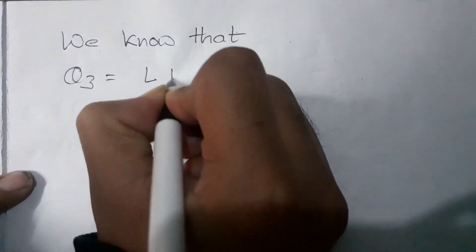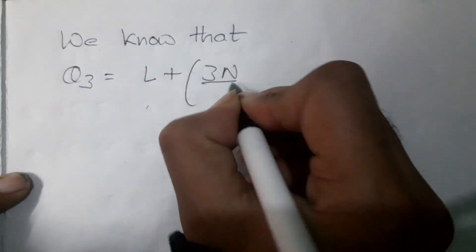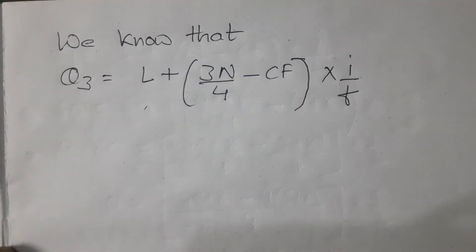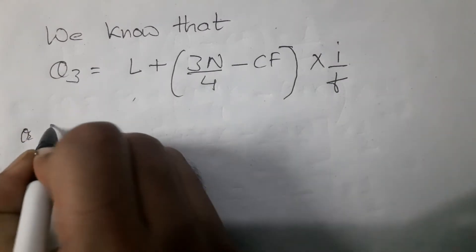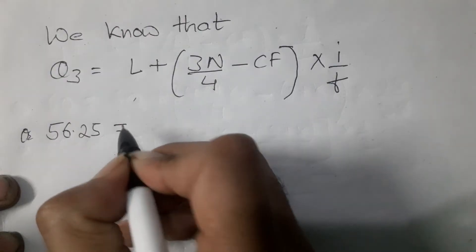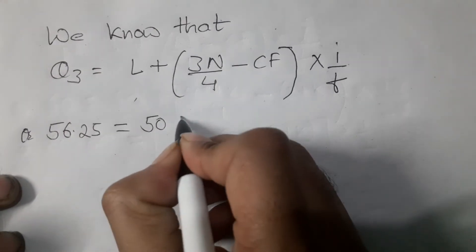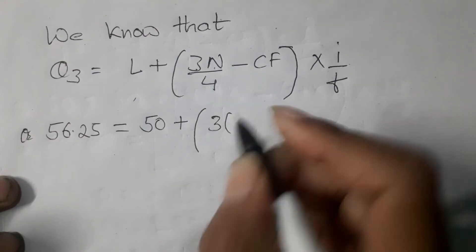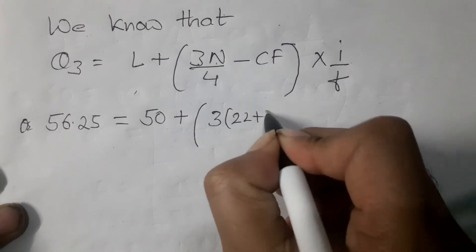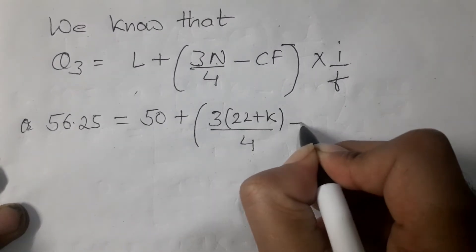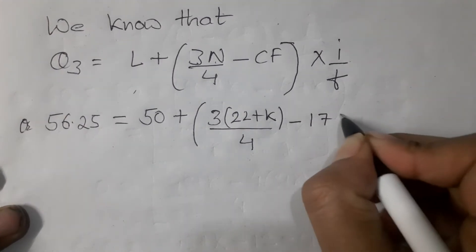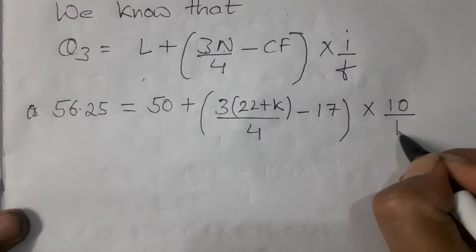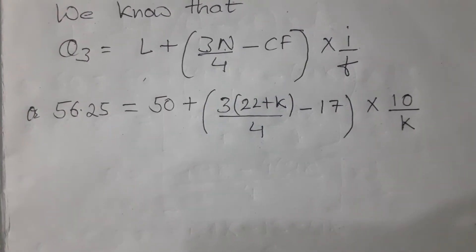So the formula is: Q3 equals L plus (3N/4 minus CF) times I divided by F. Substituting the values: 56.25 equals 50 plus (3 times (22 plus k) divided by 4, minus 17) times 10 divided by k. Here N equals 22 plus k, CF equals 17, I equals 10, and F equals k.